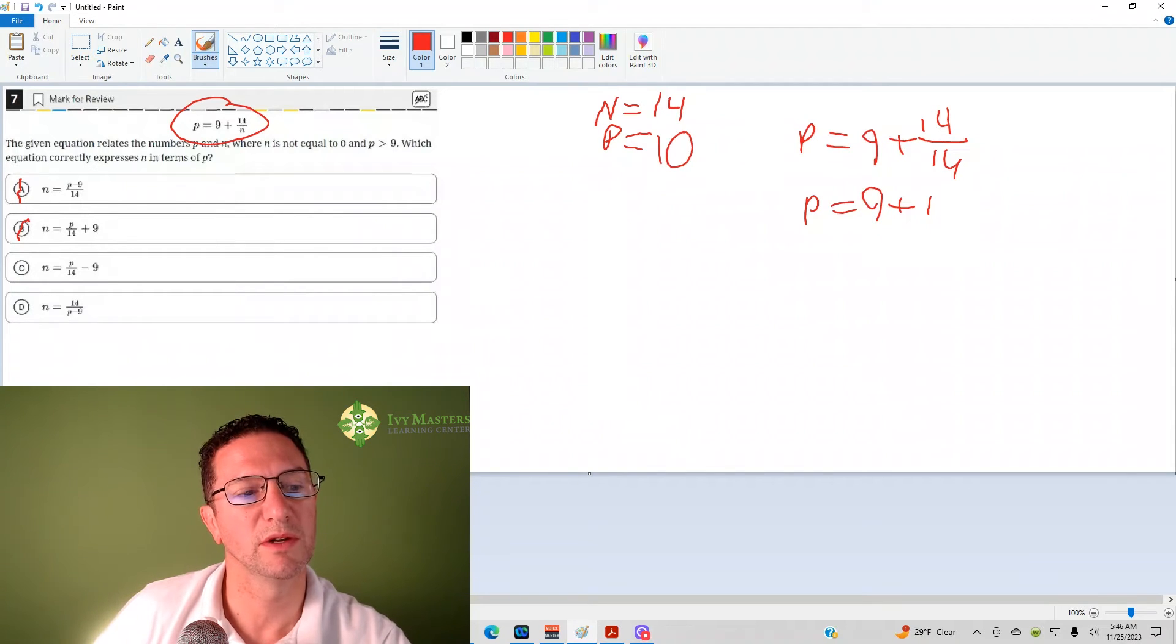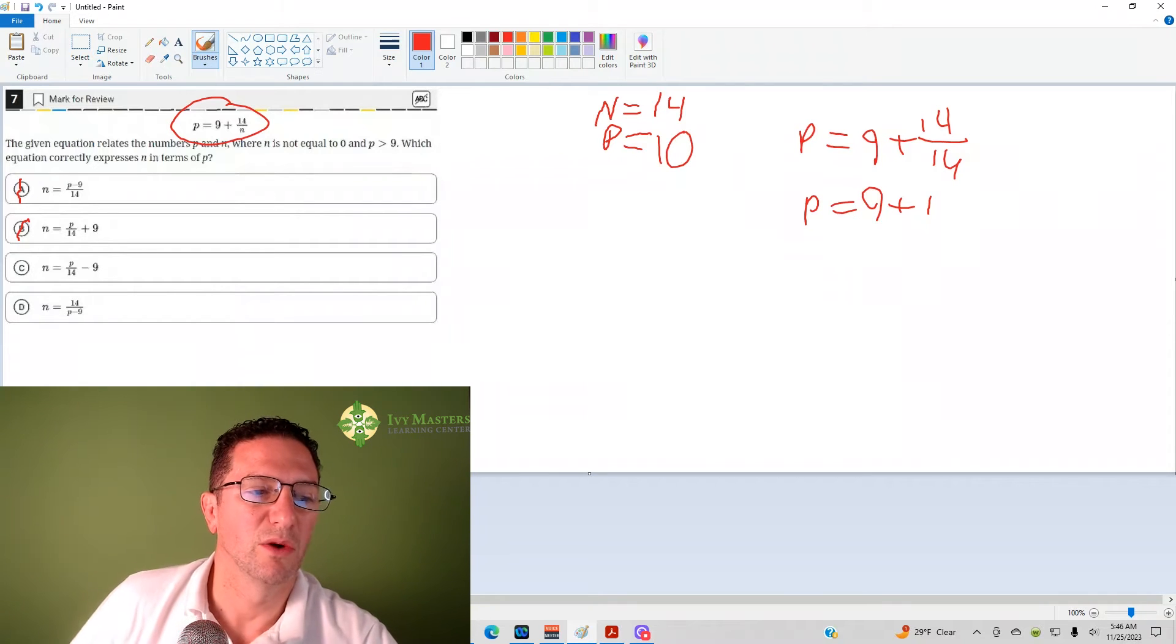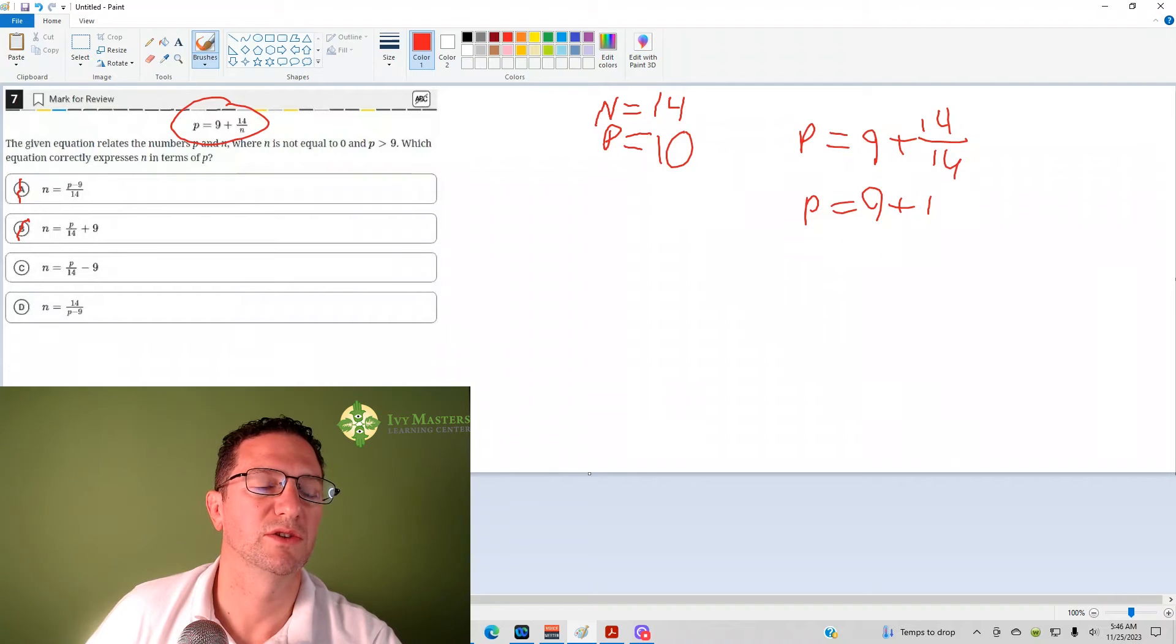Answer choice C, I put 10 in for p. 10 over 14 is going to, once again, give me 5 over 7 minus 9, you get negative 8 and 2 sevenths. So that's going to be wrong as well.